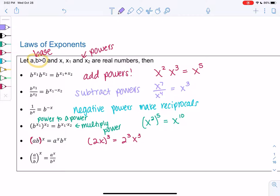Our final rule for now is the same one but division. a over b in parentheses to the x, they both get the power. a to the x over b to the x. That could be like fractions, 2 thirds squared, they both get squared, 2 squared over 3 squared.